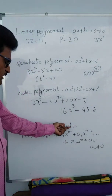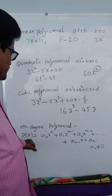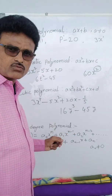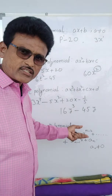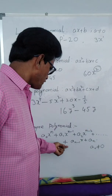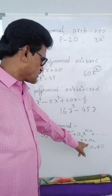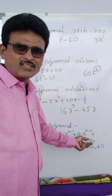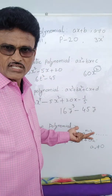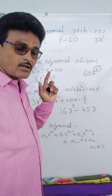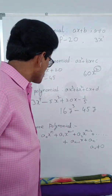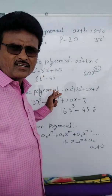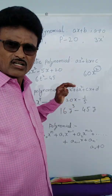Now the nth degree polynomial — general form: p(x) = a₀xⁿ + a₁xⁿ⁻¹ + a₂xⁿ⁻² + ... + aₙ₋₁x + aₙ. Here a₀, a₁, a₂, ..., aₙ are all real coefficients, x is the variable, and condition: a₀ not equal to 0. So I have explained about the degree and how different types of polynomials depend upon the degree.